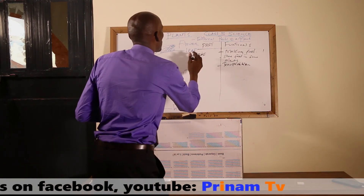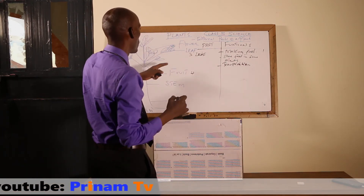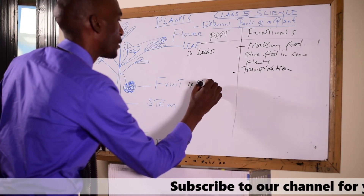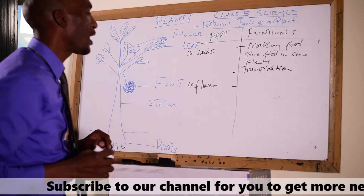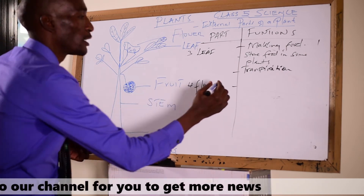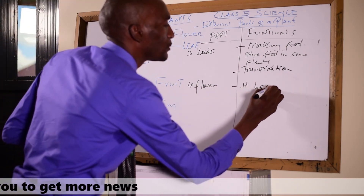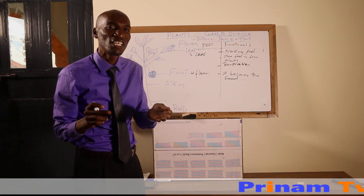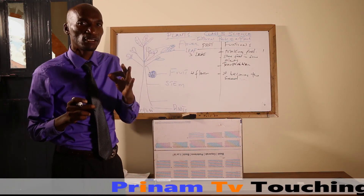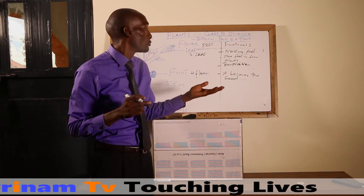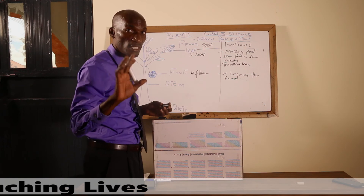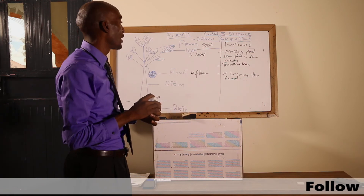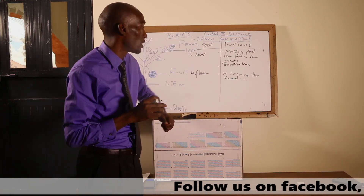Now we have number four — the flower. The flower does not have many functions, but it is very important because it becomes the seed. If you take the flower from a plant, you have denied that plant the ability to give birth to its seeds. So the flower is very important — don't touch it when you see it on a plant. It's like taking the fruit before it matures.